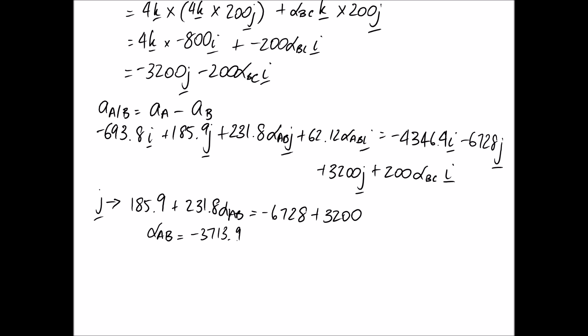And then it just becomes a case of rearranging for alpha AB. So when we do that, we end up with a final answer of negative 16.0 radians per second squared.